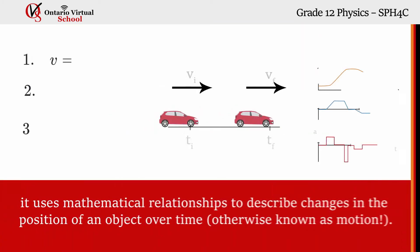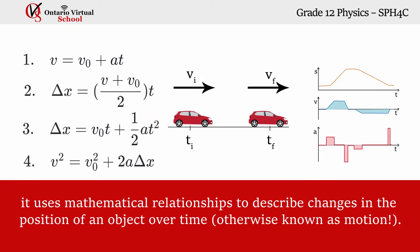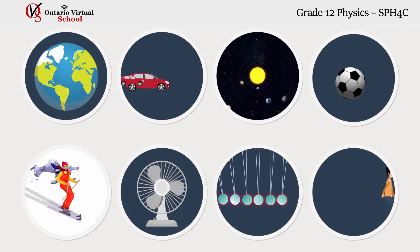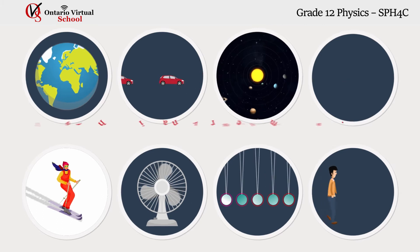It uses mathematical relationships to describe changes in the position of an object over time, otherwise known as motion. In this first unit, we will be exploring the various real-world applications of motion as well as their societal and environmental implications.